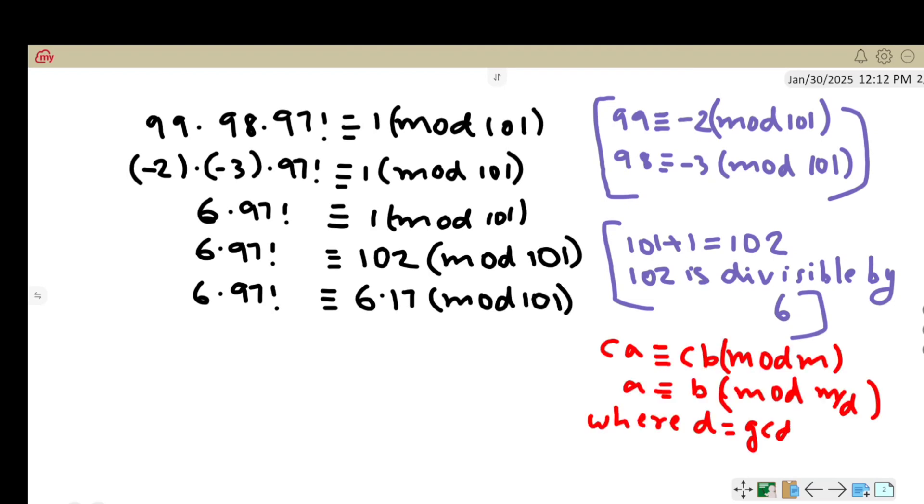If C times A is congruent to C times B mod M, then A is congruent to B mod M divided by D, where D is the GCD of C and M. Here C is 6 and M is 101, so the GCD of 6 and 101 is 1.